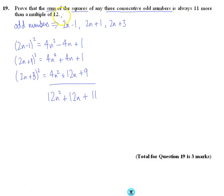So, it's always 11 more than a multiple of 12. I'm going to factor out 12, so 12 times n squared plus n, and then plus 11. This here times by 12 is a multiple of 12.